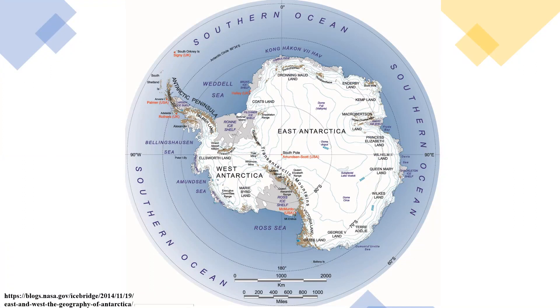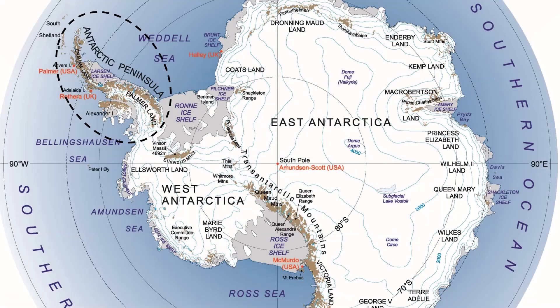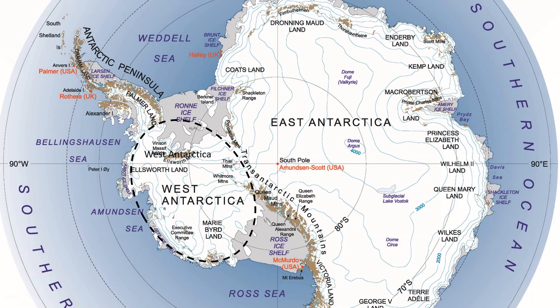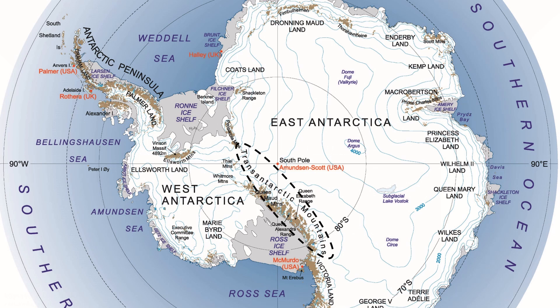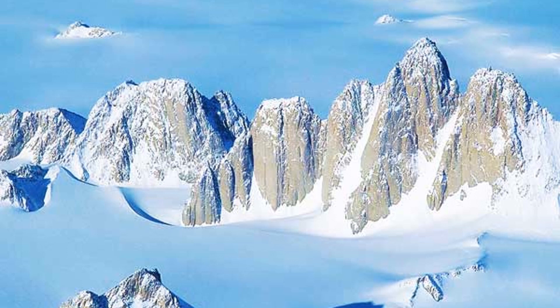Antarctica is surrounded by the Southern Ocean and can be divided into four regions: the Antarctic Peninsula, and West Antarctica — most of the West Antarctic ice sheet is grounded below sea level, in places over 1.5 miles below sea level. East Antarctica is by far the largest area and is roughly the size of the USA. Separating East Antarctica from West Antarctica are the Trans-Antarctic mountains, which are over 4 kilometres high and 2,000 kilometres long.